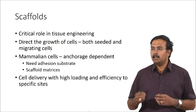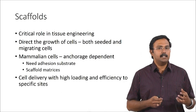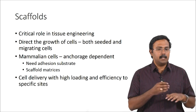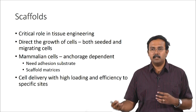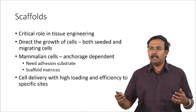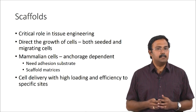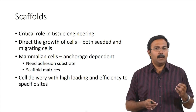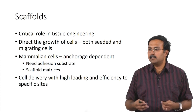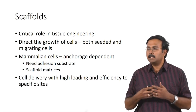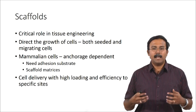Before going into details of extracellular matrix itself, what are scaffolds and what are their roles? Scaffolds have a very critical role in tissue engineering because they can direct the growth of cells — either cells you have already seeded on the scaffold used as a tissue engineered construct, or you could use only the scaffold and have cells migrating towards or away from it. Mammalian cells are anchorage dependent — they are adherent cells that need some substrate on which they can attach and then grow.